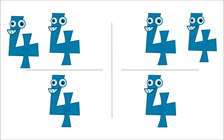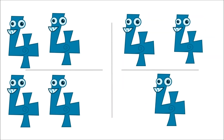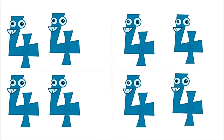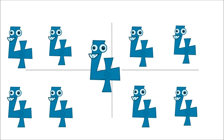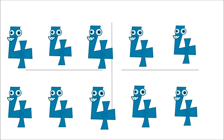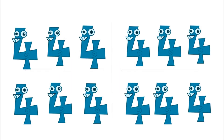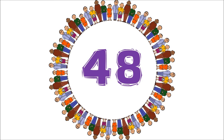Six fours are twenty-four. Seven fours are twenty-eight. Eight fours are thirty-two. That's true! Nine fours are thirty-six. Ten fours are forty. Forty! Eleven fours are forty-four. Twelve fours are forty-eight.